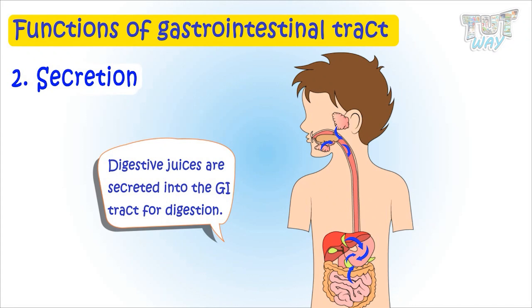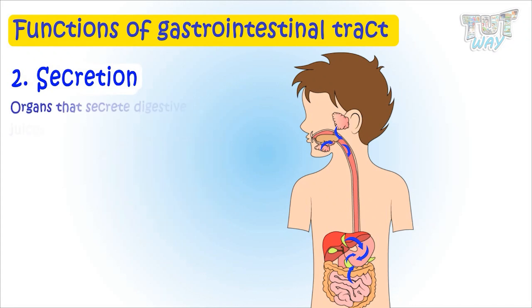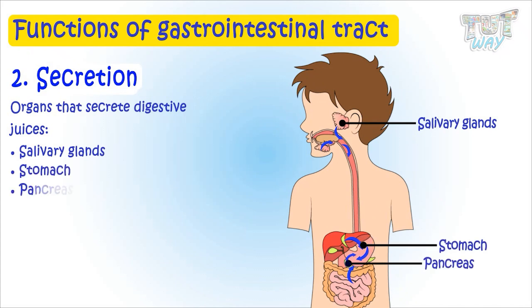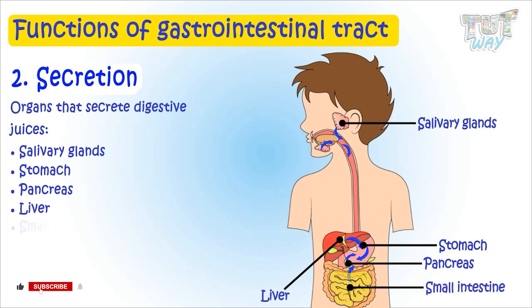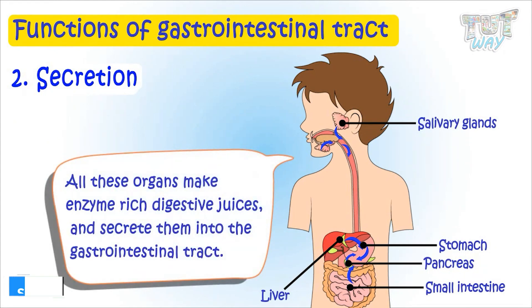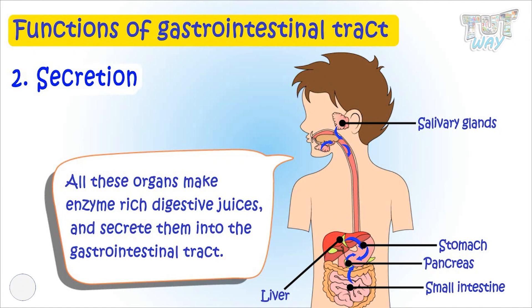Now let's learn about the organs that secrete digestive juices: salivary glands present in our mouth, stomach, pancreas, liver, and small intestine. All these organs make enzyme-rich digestive juices and secrete them into the GI tract, which helps to break down food into simpler substances.